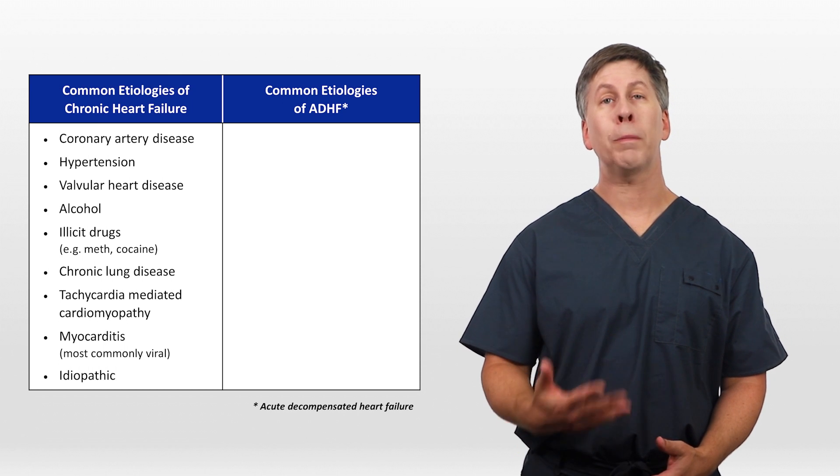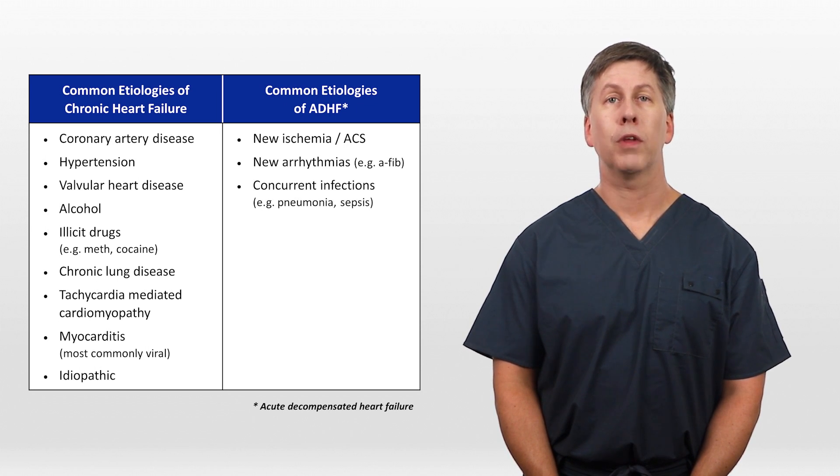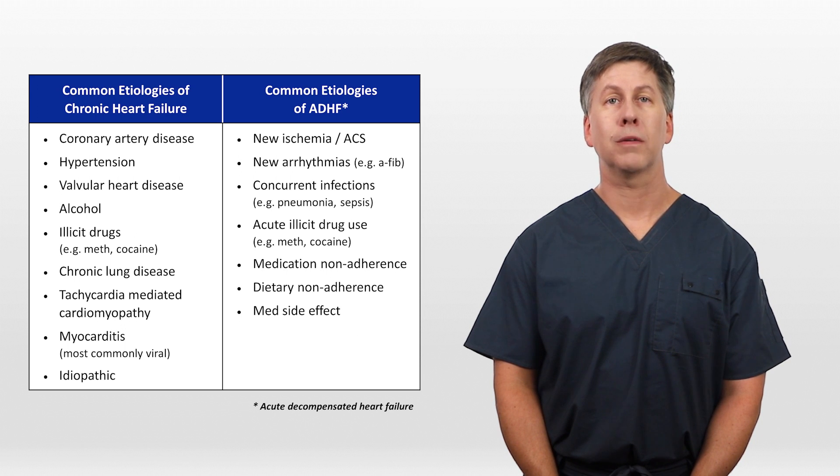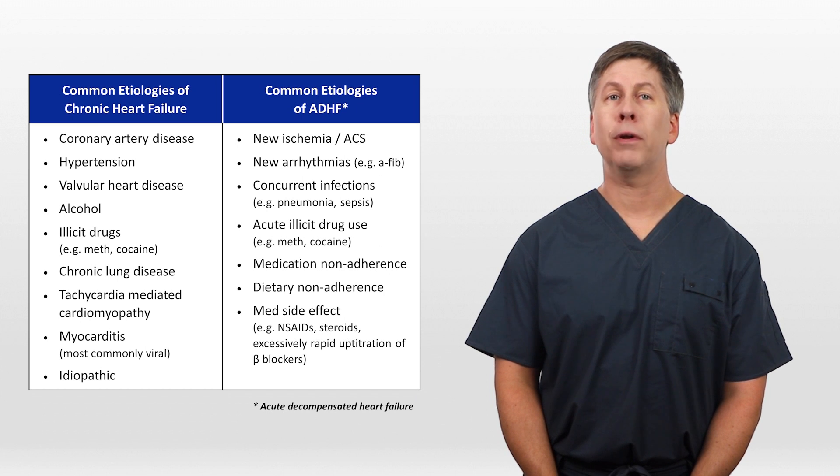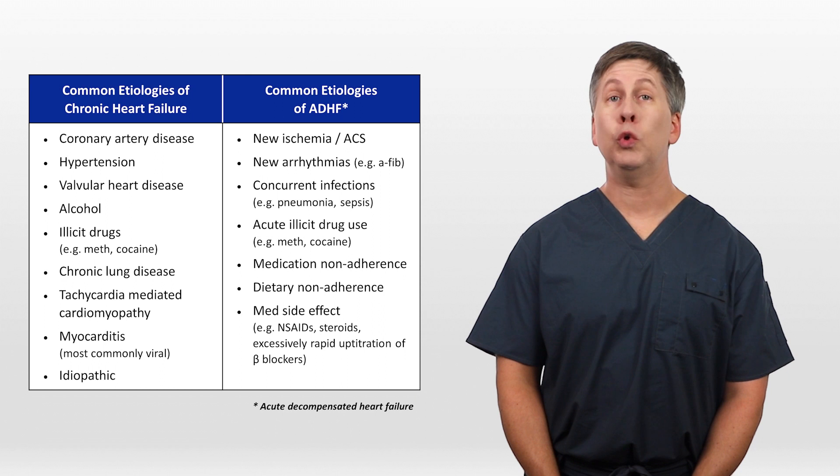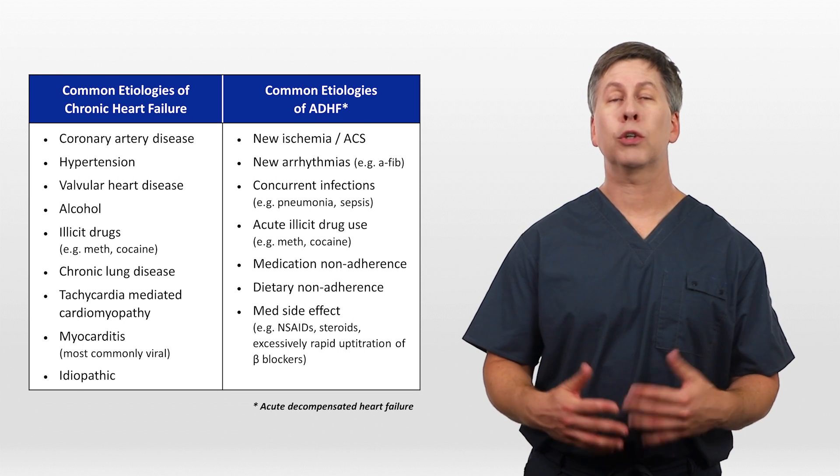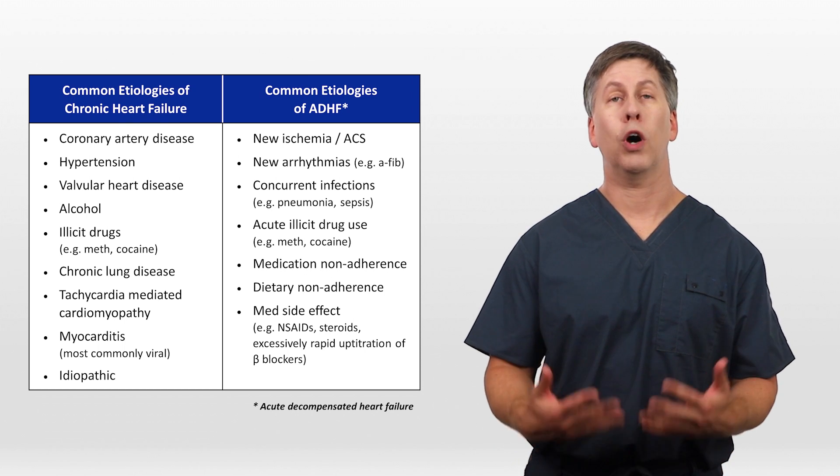Common etiologies of acute decompensated heart failure include new ischemia including acute coronary syndrome, new arrhythmias particularly AFib, concurrent infections, acute illicit drug use, medication non-adherence, dietary non-adherence, and medication side effects, for example NSAIDs and steroids which lead to fluid retention, and the excessively rapid uptitration of beta blockers. Whenever you admit a patient with acute decompensated heart failure, it's critical to identify and address the proximal cause.